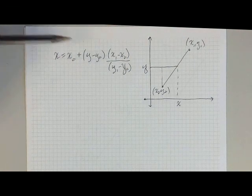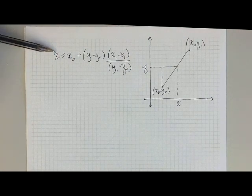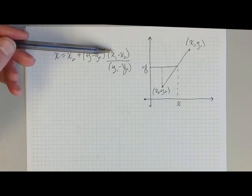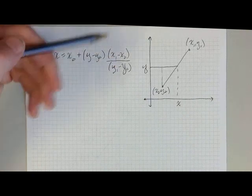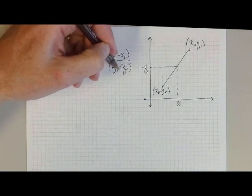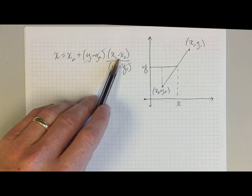If you think of this in terms of units, the new value of x is the initial value of x plus the amount of change in x. The units cancel out, so we end up with the initial value of x plus the amount of change in x.